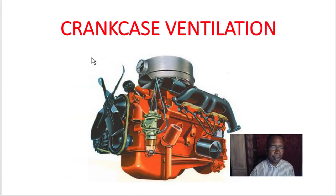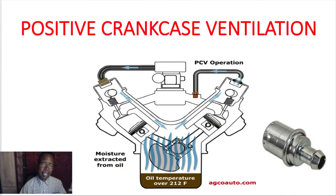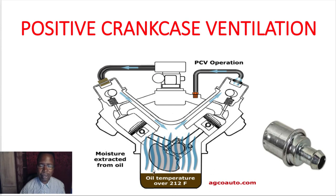Here's the PCV system — crankcase ventilation. Its job is to take the vapors out of the crankcase and reroute them into the intake to be burned, as you see here. Fresh air goes in through the breather, past the piston rings into the crankcase at the bottom of the engine. The vapors are pushed out of the crankcase and sucked back up through the PCV valve into the intake to be burned.